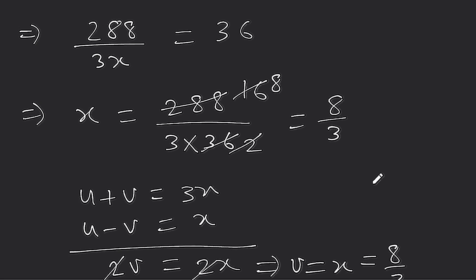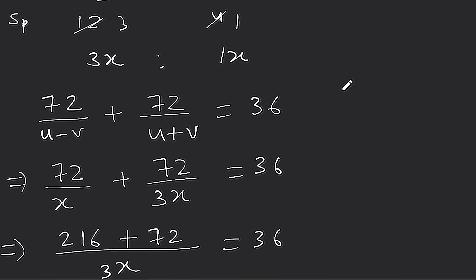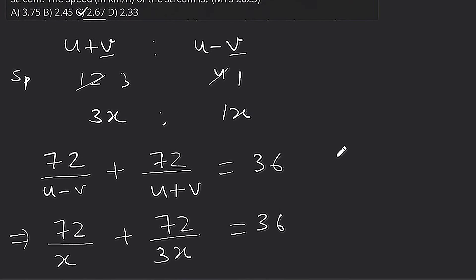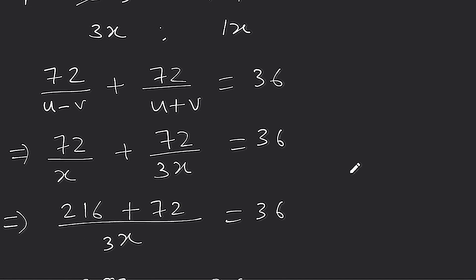Answer 2.67 आ रहा है — तो option C होगा हमारा answer। थोड़ा repeat करते हैं: पहले हम लोगों ने u+b और u-b का ratio find किया जो कि same time में distance के ratio के बराबर होता है। Simple बात है कि same time में 12 km और 4 km जाता है तो speed ratio 3:1 हो गया।